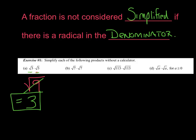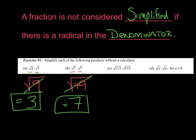Watch how it works again. Radical 7 times radical 7 — you want to say radical 49. But again, what's the square root of 49? It's 7. Do you see a pattern yet? Let's do the next one. Radical 113 times radical 113 — well, I don't know what that multiplies to, but I know that if it's a radical times itself, it just turns out to be 113.